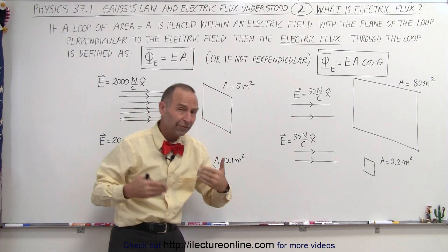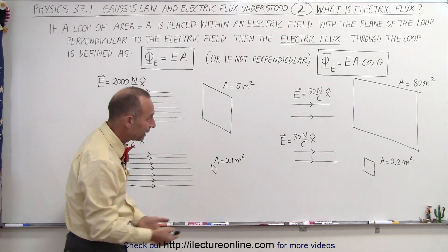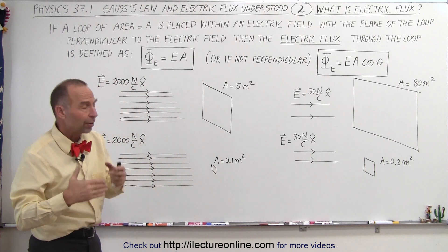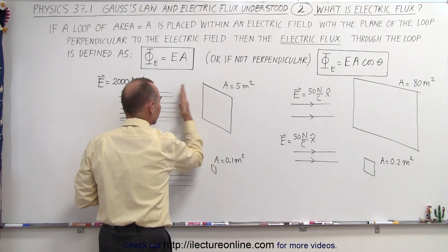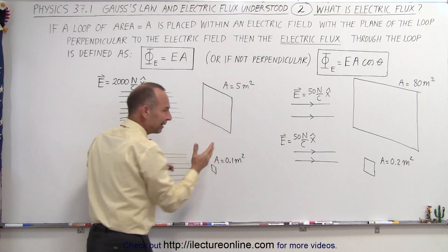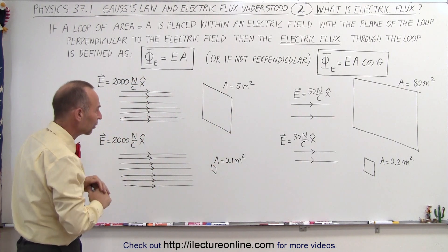and then here we have one that's much weaker, 50 N per Coulomb, also pointing in the x-direction, and then we have some areas. Let's assume in each case that the area is perpendicular to the electric field. I drew it like this so you can see what the size of the area looks like.